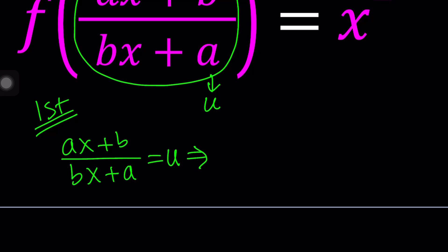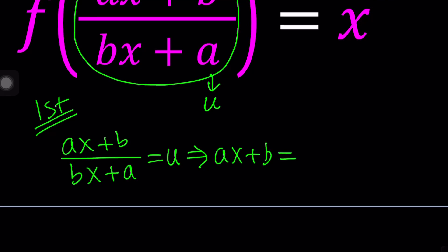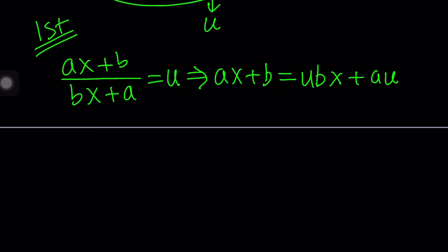From here, let's go ahead and try to solve for x. Then we can substitute it on the right-hand side. We get ax+b equals bux plus au.